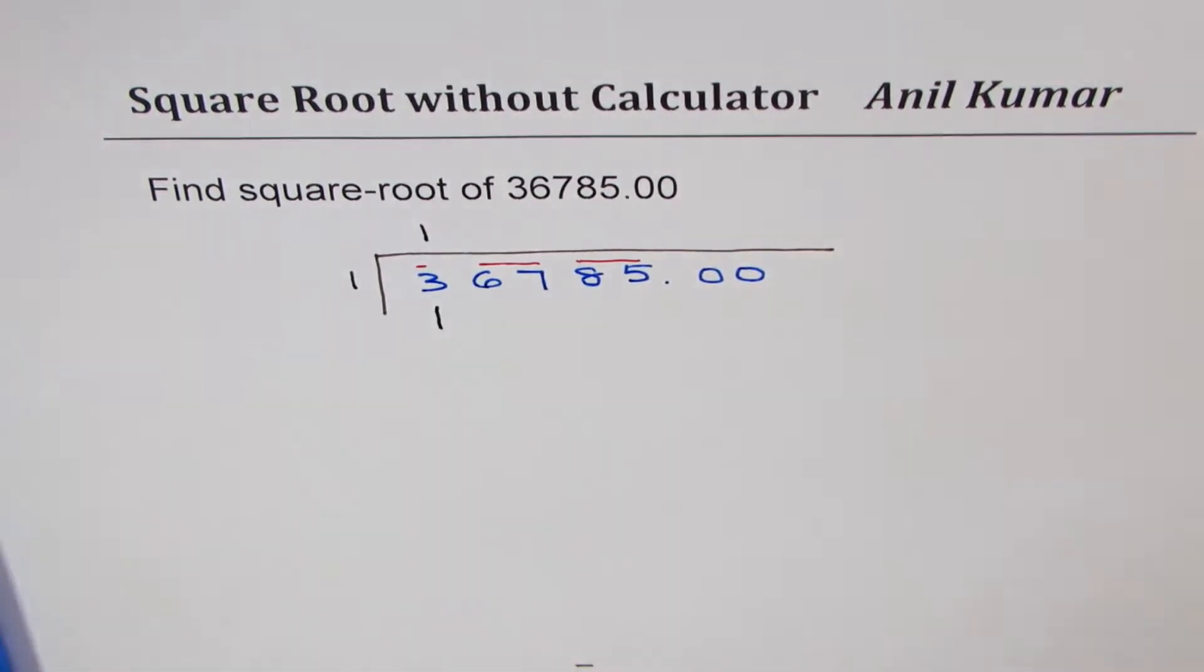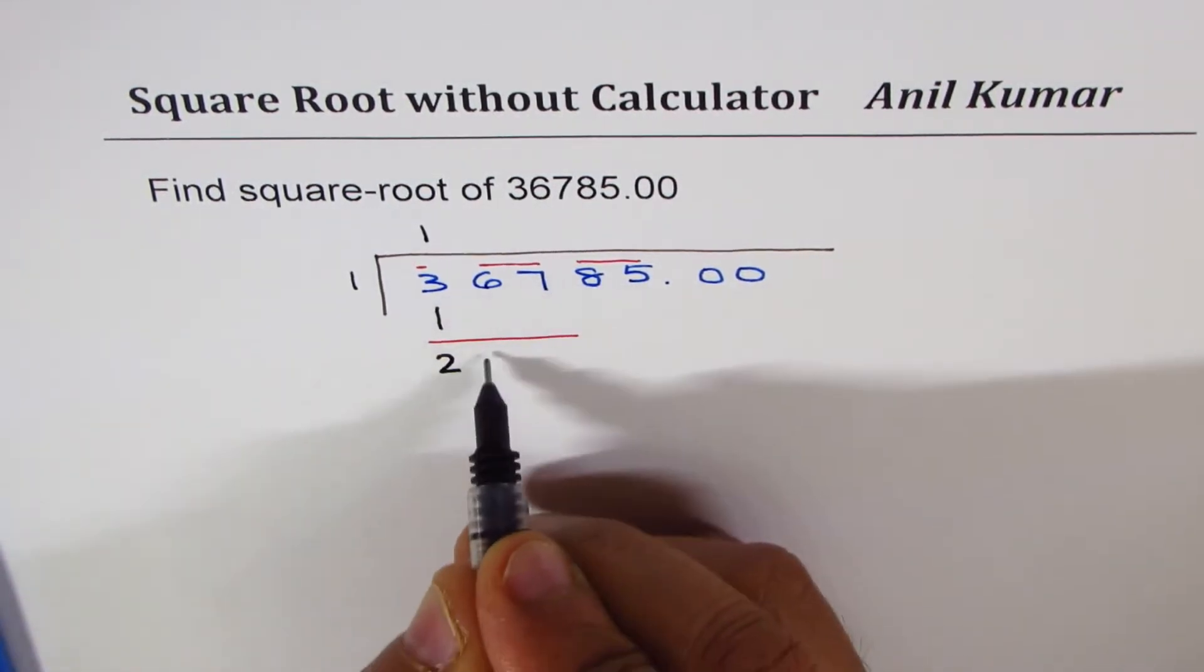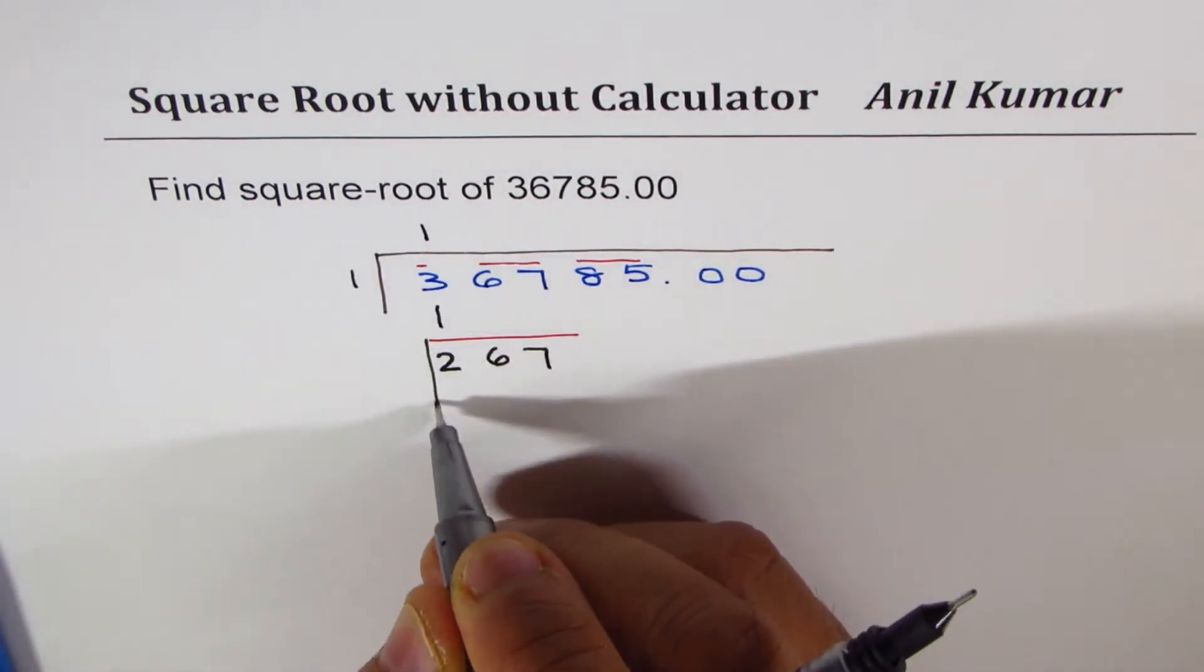So one times one is one, and then you take away as you do in normal division. If I take away, I get two here. Bring down 67.